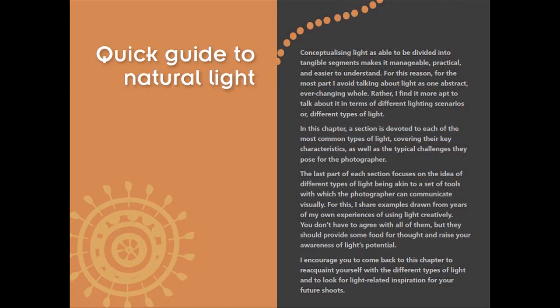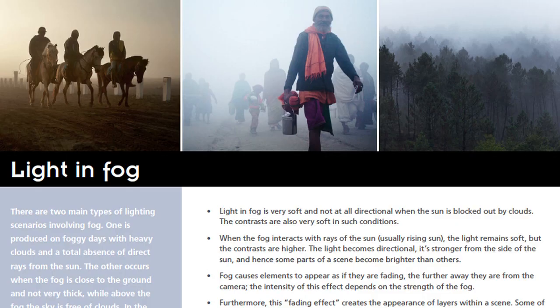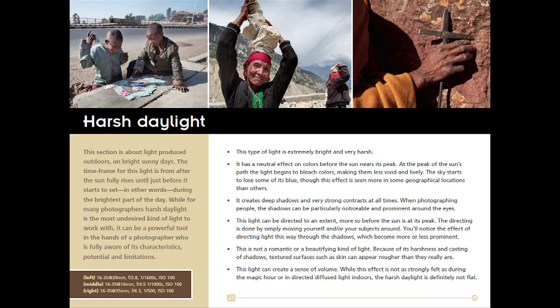Chapter five is Mitchell's quick guide to natural light. He covers the golden hour light, which is end of the day or beginning of the day. How light reacts in fog and creates its own special mood. He even shows you how to shoot in harsh daylight, which often people think is the worst light you could possibly photograph in — but it's not necessarily true. It depends on your subject and the angle of the light.